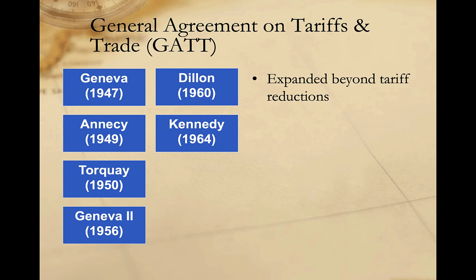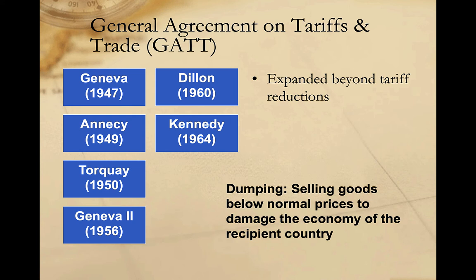Beginning in 1964 with the Kennedy Round, the focus of GATT's work began to broaden beyond a narrow focus on reducing tariffs. While negotiations continued to reduce tariffs and liberalize international trade, negotiations after 1964 expanded the scope into new areas. The Kennedy Round addressed the problem of dumping — in international trade, dumping refers to selling goods below normal prices, often below the cost of production, in an effort to damage the economy of the recipient country. Dumping is often an attempt to drive out competition in order to later establish a monopoly. The Kennedy Round addressed dumping by permitting countries to take measures to prevent it.